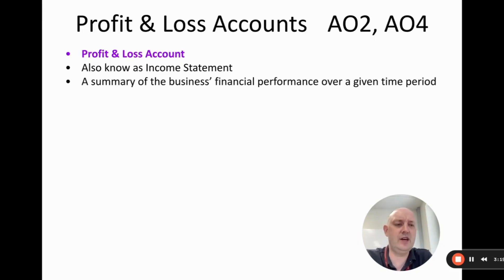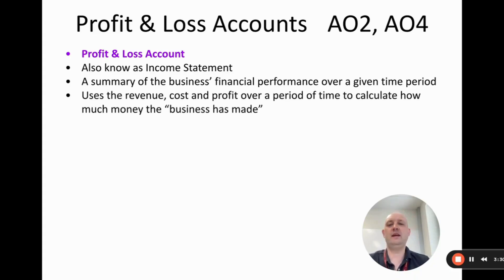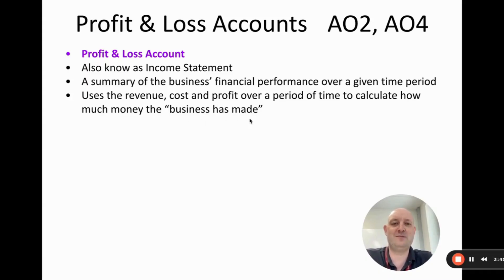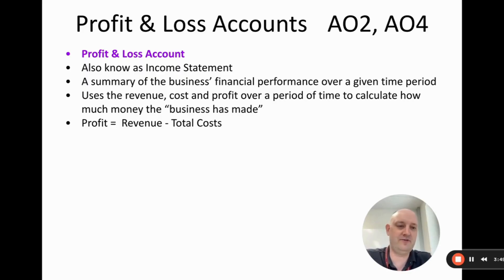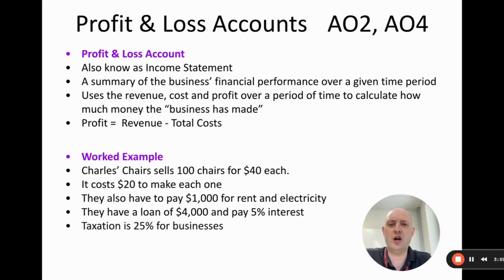The profit and loss is also known as the income statement. It is a summary of the business's financial performance over a given time period, normally a year but sometimes a quarter. We use revenue, cost, and profit — covered in a previous chapter — to calculate how profitable a business is. The profit formula is: revenue minus total cost, or revenue minus fixed cost minus variable cost.